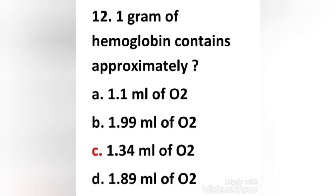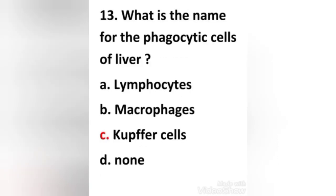Next question: 1 gram of hemoglobin contains approximately — (a) 1.1 ml of oxygen, (b) 1.99 ml of oxygen, (c) 1.34 ml of oxygen, (d) 1.89 ml of oxygen. The right answer is option C: 1.34 ml of oxygen.